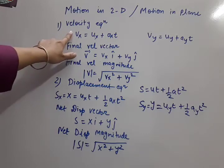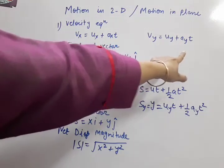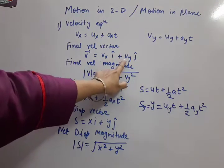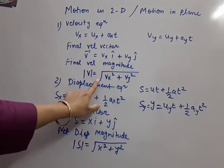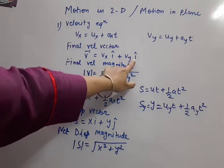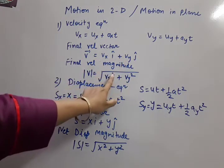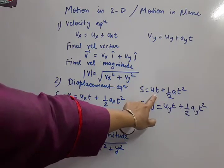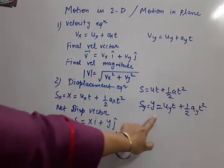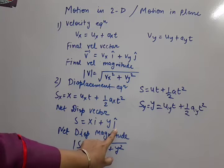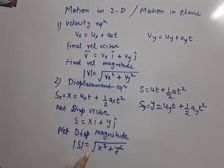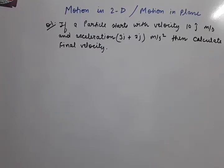So these equations are of use for solving any numerical of motion in 2D. To revise: velocity in x direction uses vx = ux + axt, velocity in y direction uses vy = uy + ayt. If we need the velocity vector, we put î and ĵ with vx and vy. For magnitude, root of vx² + vy². Similarly for displacement: written with î and ĵ it is a vector; with square root it is magnitude. Now let us take one numerical for practice.